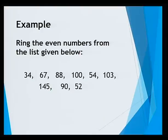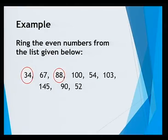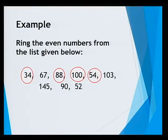Let us take an example: ring the even numbers from the list given below. We need to see which of these are even numbers. 34 ends with 4, so it is an even number. 67 is not exactly divisible by 2 — there will be a remainder of 1, so it is not an even number. However, 88 ends with 8 and is therefore an even number. 100 ends with 0, so it is an even number. 54 ends with 4, or we can say 54 is exactly divisible by 2, so it is an even number. 103 and 145 are not even numbers because they are not exactly divisible by 2.